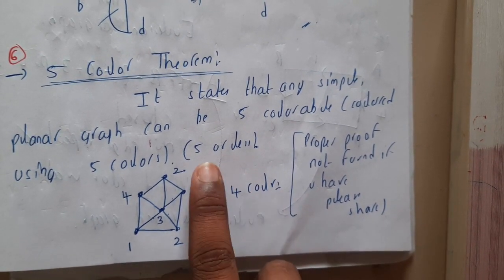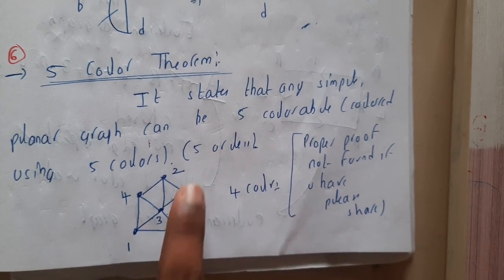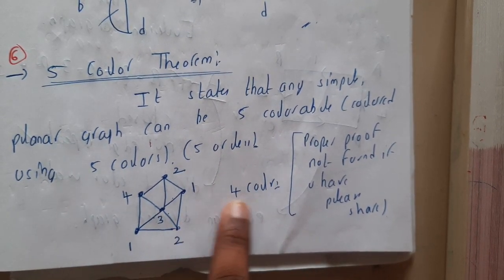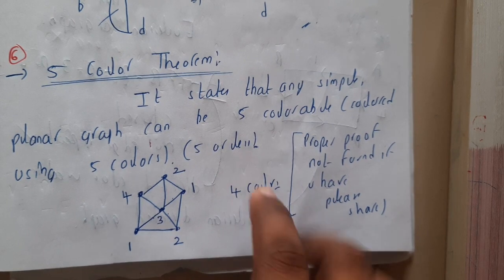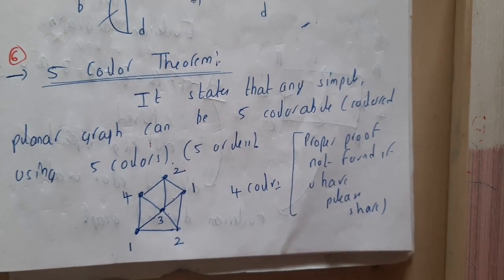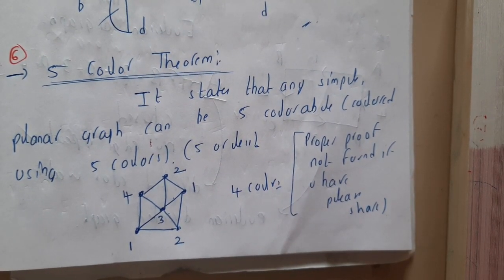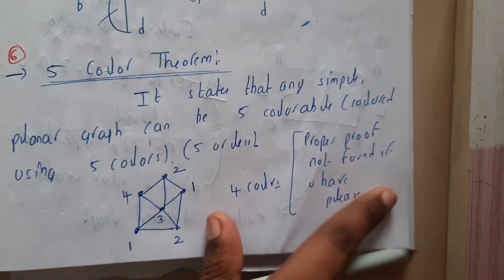Basically it states that five or less colors. I took a small example here in which we needed only four colors. In this way it will be working. If I find the proper algorithm for it, I'll be just sharing it with you guys, don't worry.